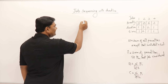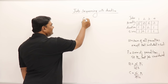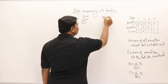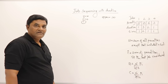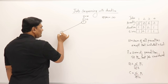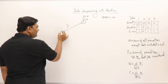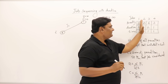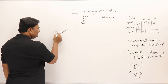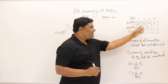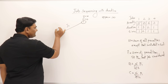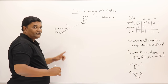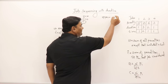Let us generate a state space tree. The first root node has cost zero and upper bound infinity; we also maintain an 'upper' variable initialized to infinity. Now, if job one is included in the solution, we are skipping nothing, so cost is zero. The remaining jobs' penalties are 10 + 6 + 3 = 19, so upper bound is 19. We update our upper variable from infinity to 19.